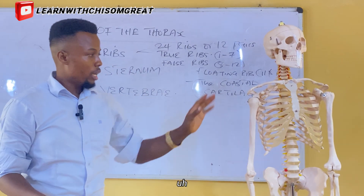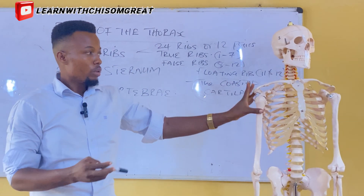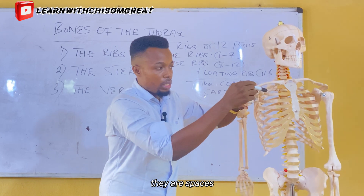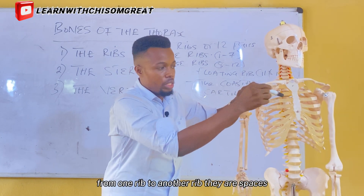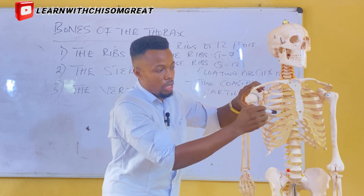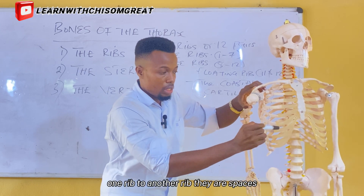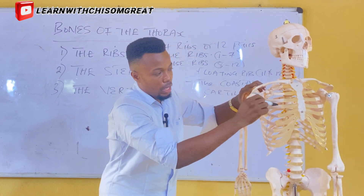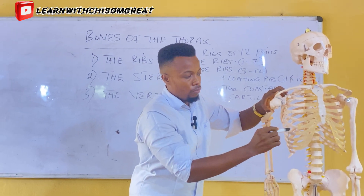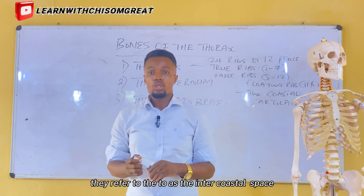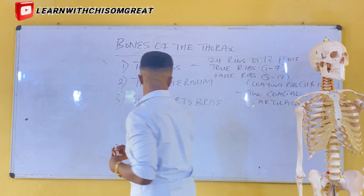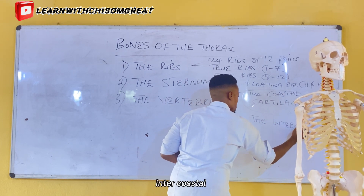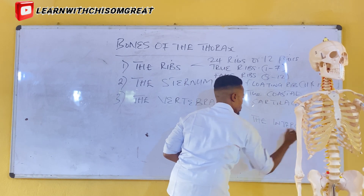From one rib to another rib, there are spaces. These spaces are referred to as the intercostal space. You can see all these spaces here — from one rib to another, they are referred to as the intercostal space.